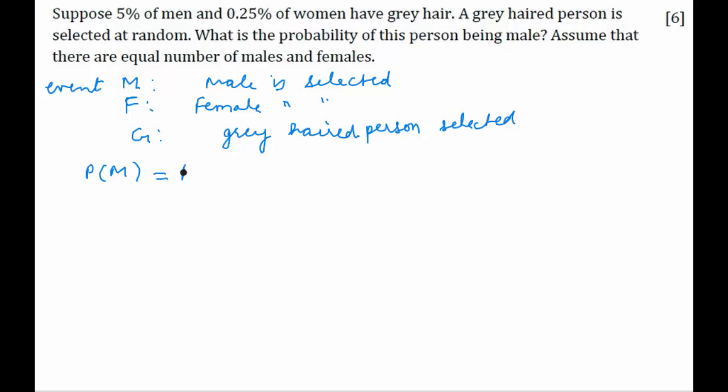P of M and P of F are going to be same as there are equal number of males and females. Let's call this as half, number of males equal to number of females.